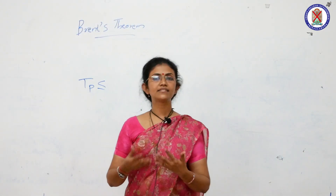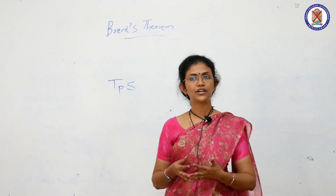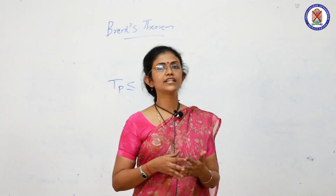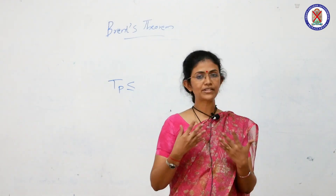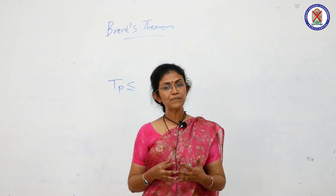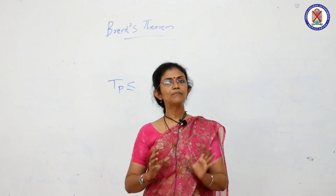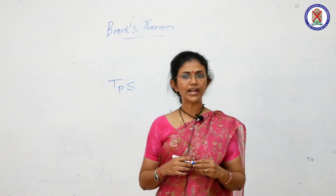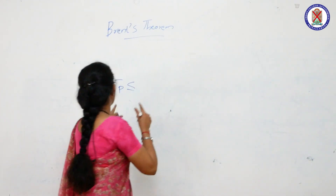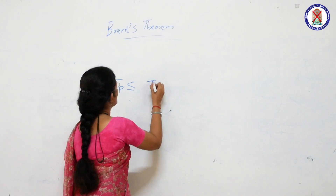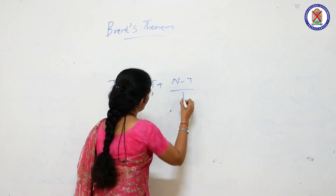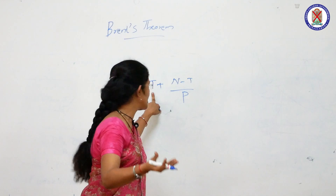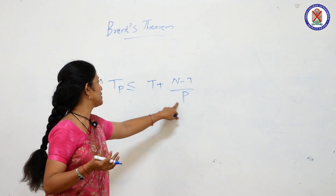Now we will discuss Brent's theorem as applied to parallel merge sort. We assume n operations with time T. Given enough processes p, the parallel merge sort runtime T(p) must satisfy: T(p) ≤ T + (n − T) / p, where n is the total number of operations and p is the total number of processes.